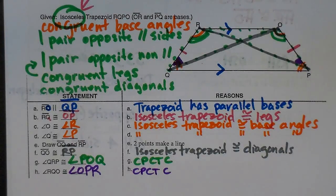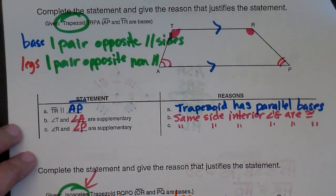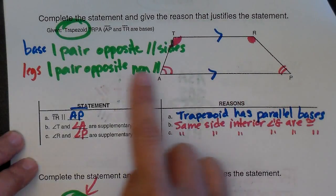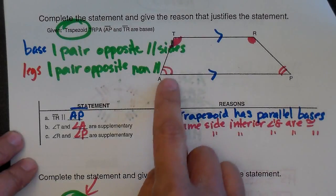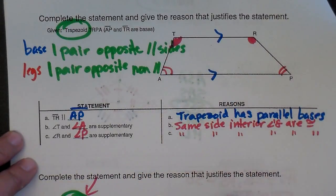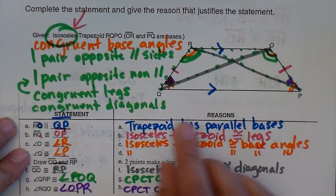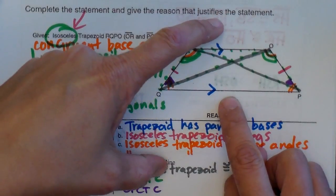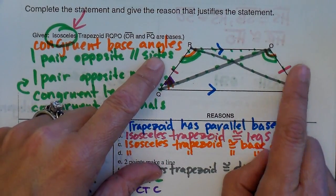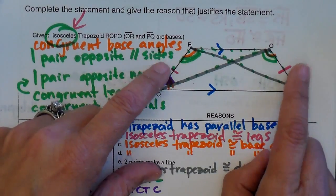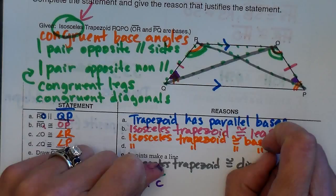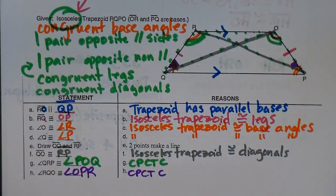So those are the characteristics of an isosceles trapezoid — you can use them to find and prove things. A standard trapezoid has one pair of parallel bases and one pair of non-parallel legs, and the parallel lines create same side interior angles that are supplementary. An isosceles trapezoid opens up a whole new ball of wax: base angles are congruent, legs are congruent, and the diagonals are congruent.